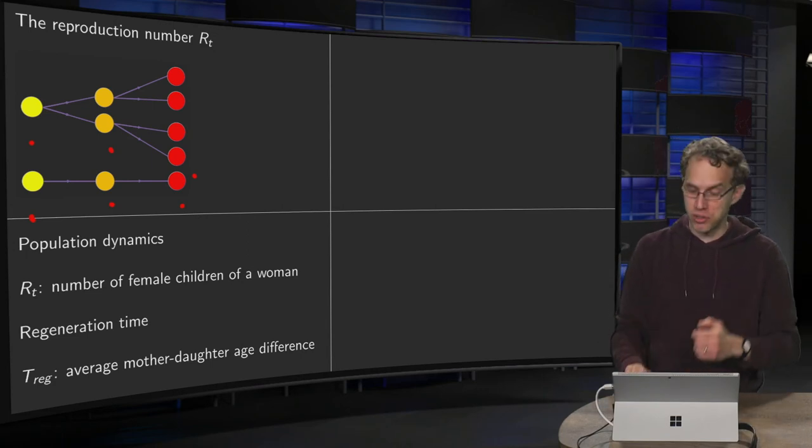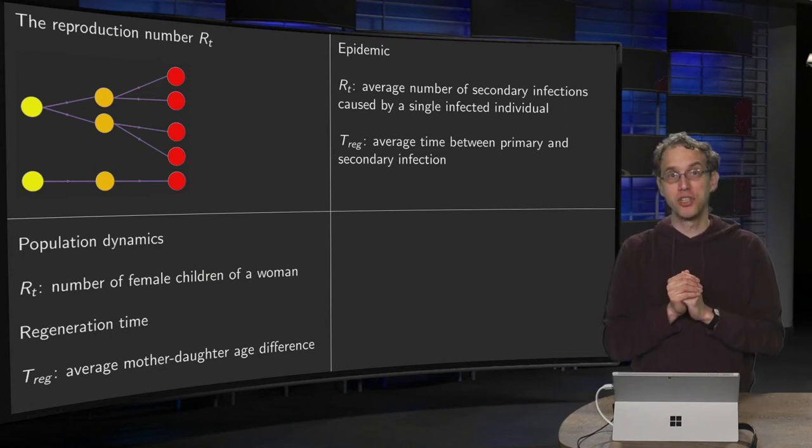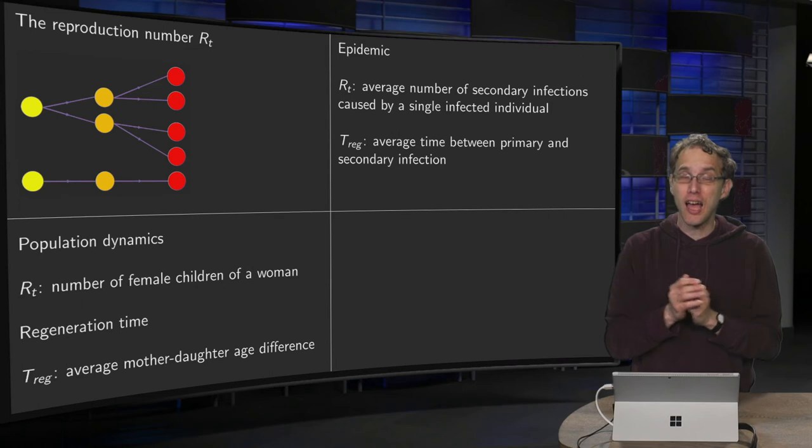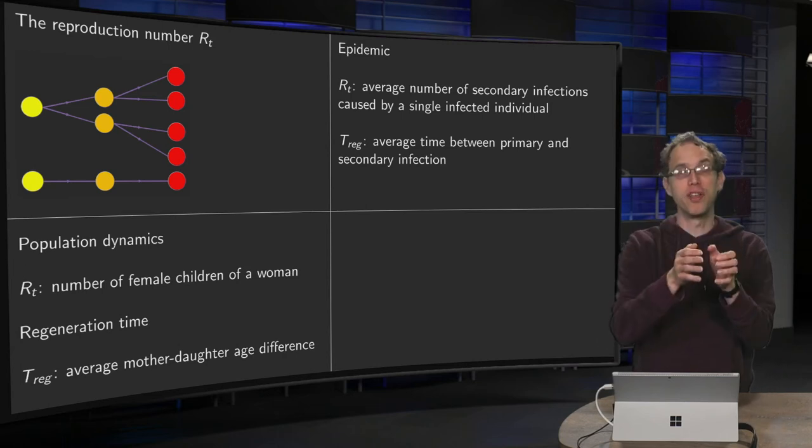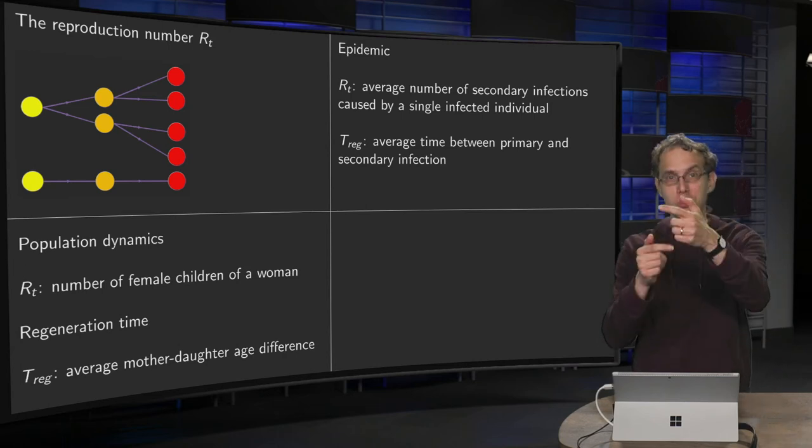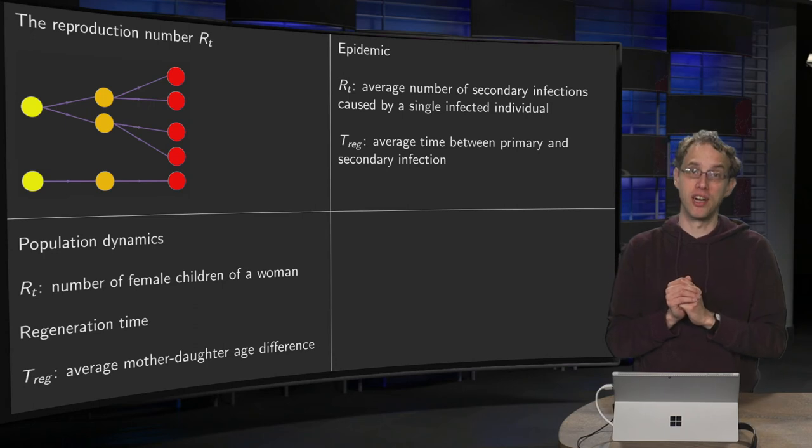Now, moving on to epidemics, definitions are very similar. So the RT, the reproduction number, is the average number of secondary infections caused by a single individual. In the first picture, we start with one infected individual, he causes two secondary infections, and both secondary infections cause two tertiary infections.